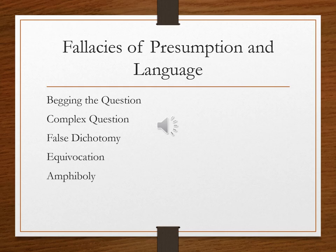In this presentation, we enter the last two categories of fallacies. This is a pretty small group — only five total fallacies. We have three fallacies of presumption: begging the question, complex question, and false dichotomy.